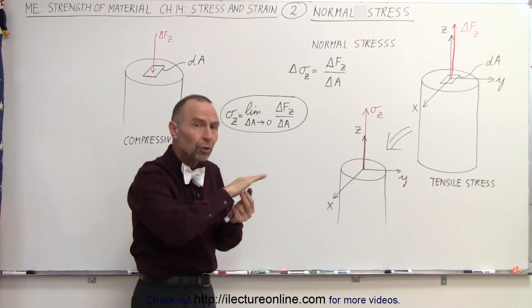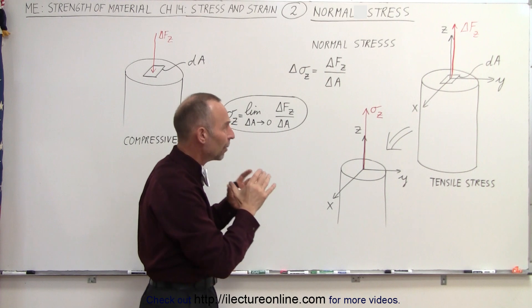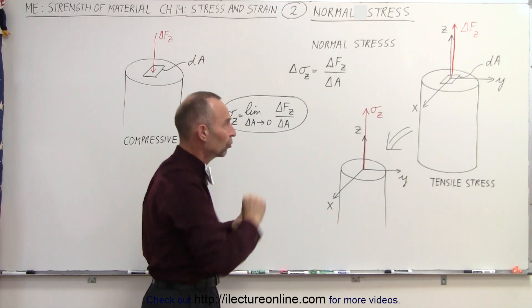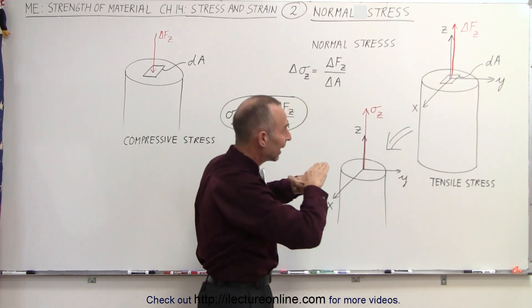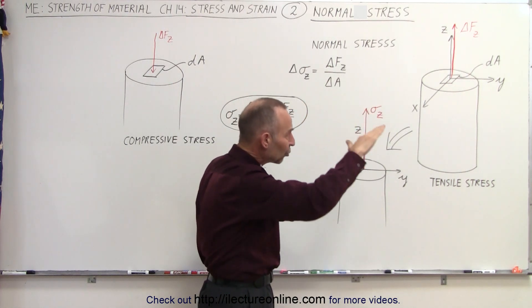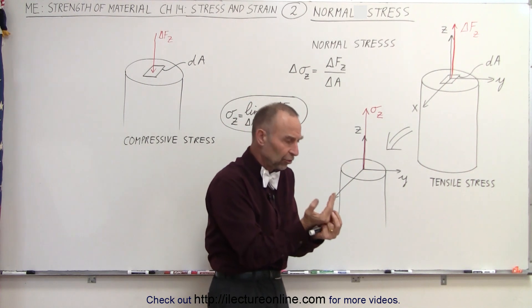Now if you make a random cross-section cut and we take a look inside that object and we look at the cross-sectional surface, we can take a small area element and call it dA. Notice that dA is in the XY plane the way this is oriented.